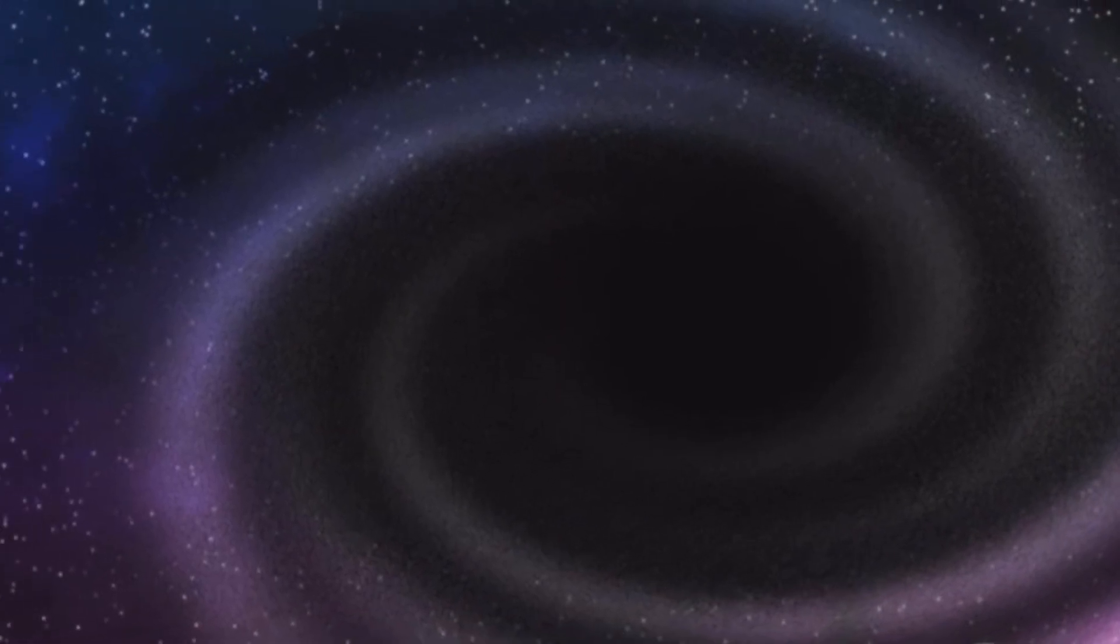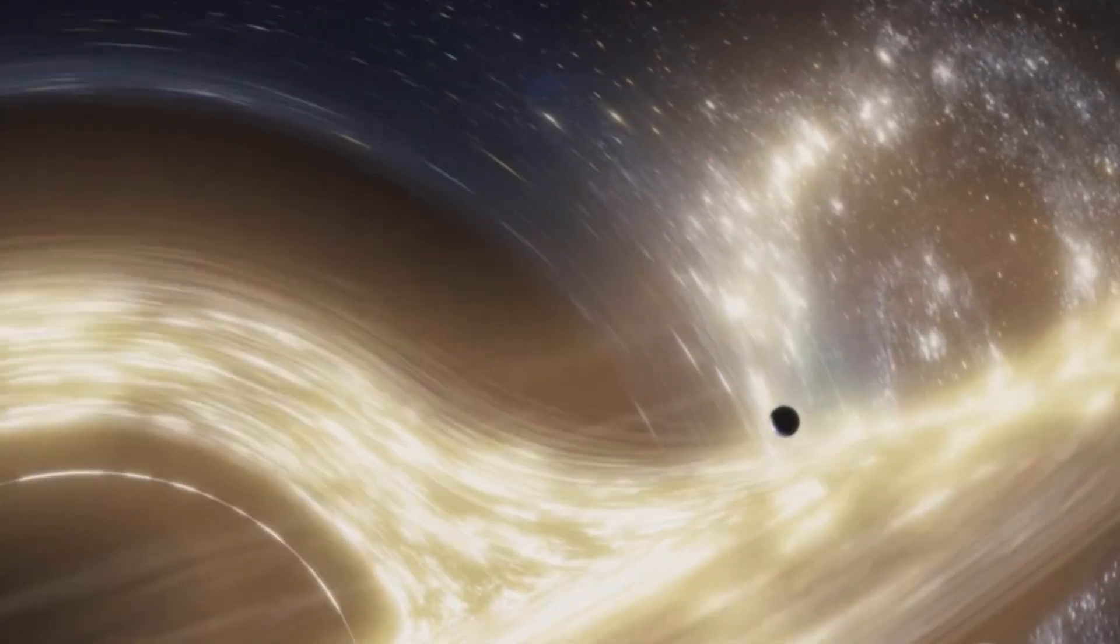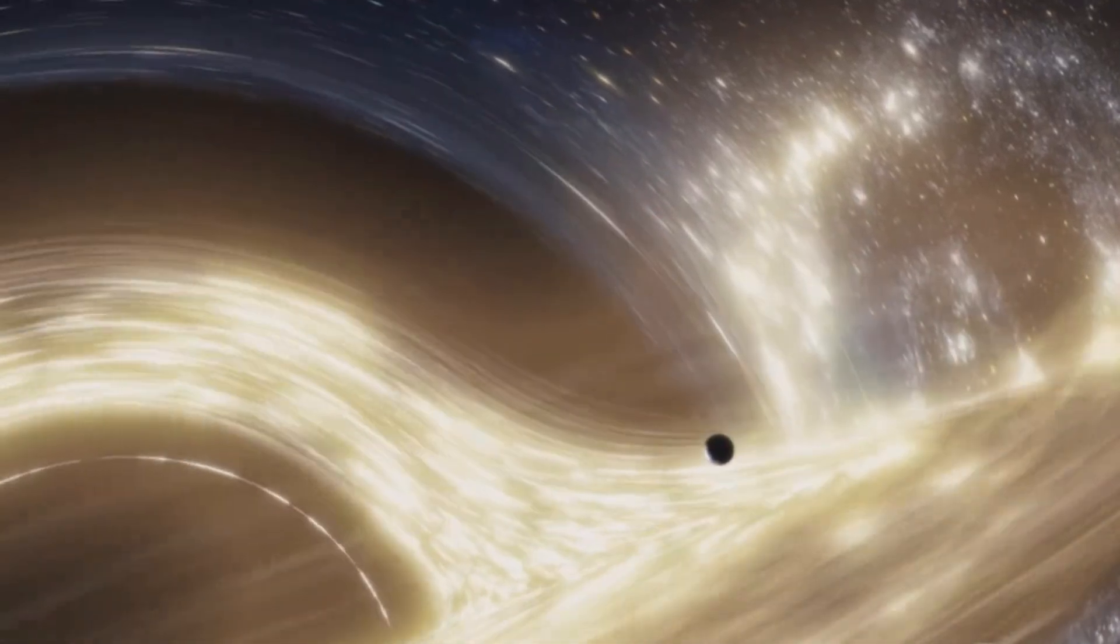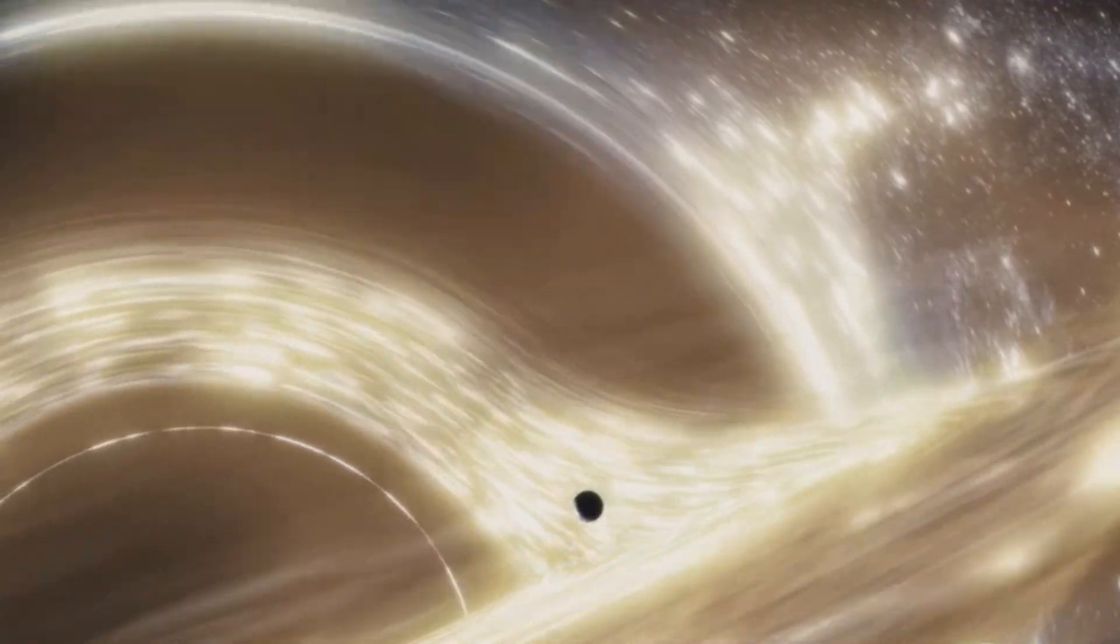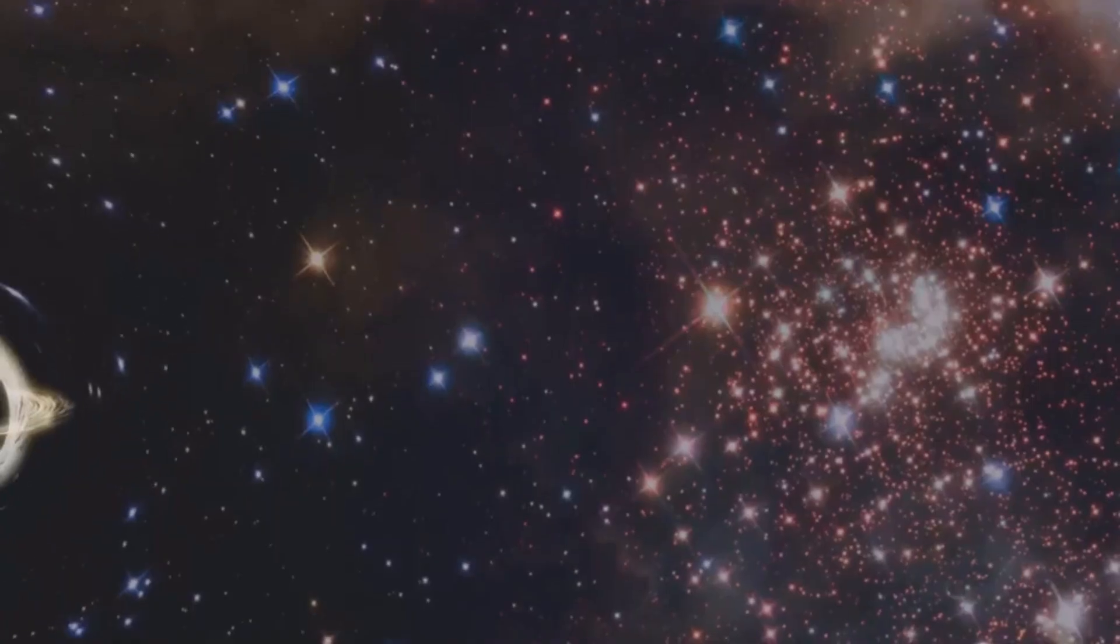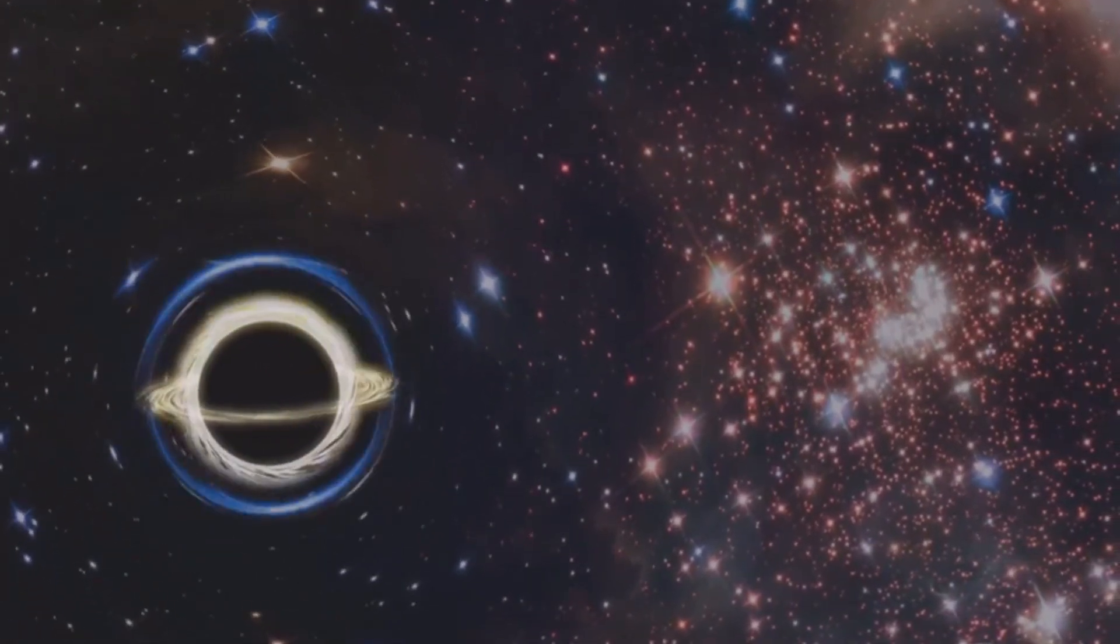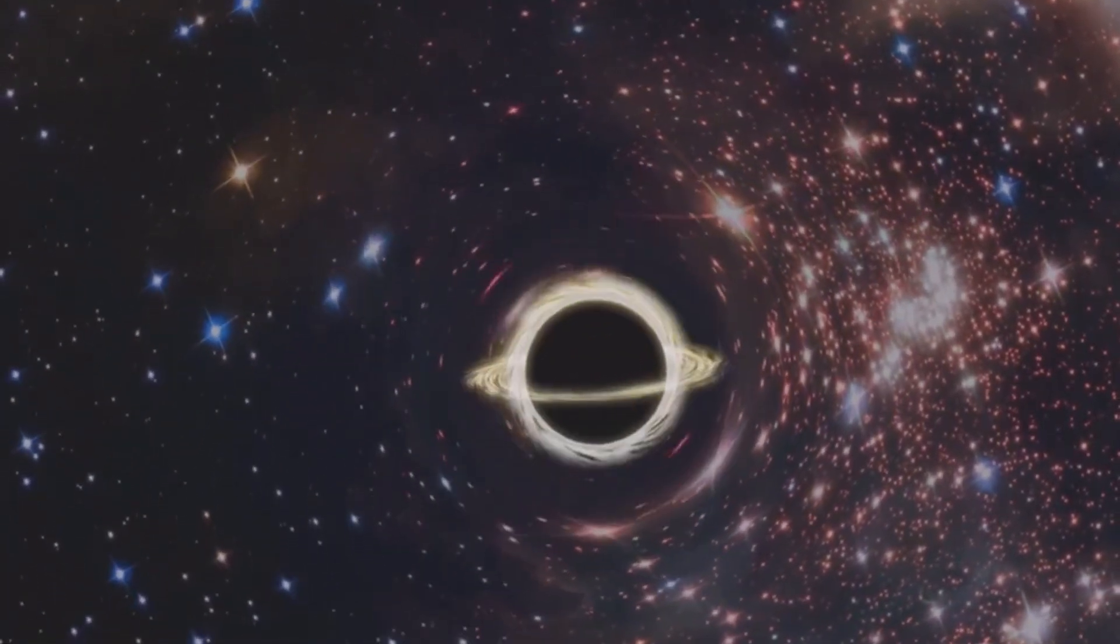It is surrounded by a swirling disk of superheated gas and dust, known as an accretion disk. This disk is a chaotic, luminous beacon in the darkness. As material spirals inwards towards the event horizon, it is heated to millions of degrees, emitting intense radiation that we can detect here on Earth. This radiation is a telltale sign of the black hole's voracious appetite.